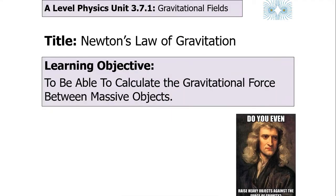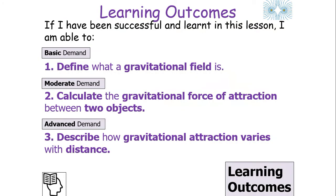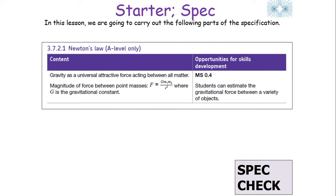In today's lesson, we're going to look at what Newton's Law of Gravitation is, and look at how to calculate the gravitational force between massive objects. If we're successful, we can define what a gravitational field is, calculate the gravitational force of attraction between two objects, and describe how the gravitational attraction varies with distance, which falls into the AQA A-Level Physics specification — Newton's Law of the Gravitational Field topic, found in Paper 2.